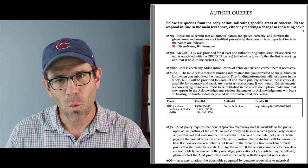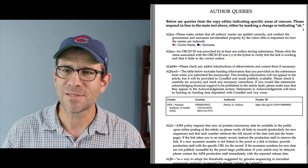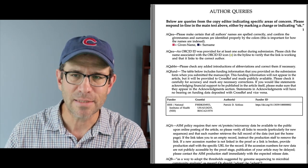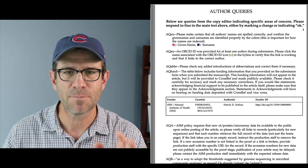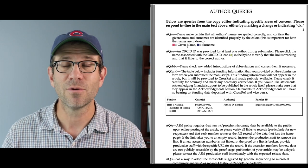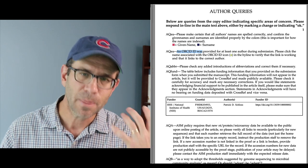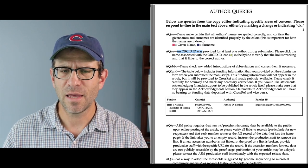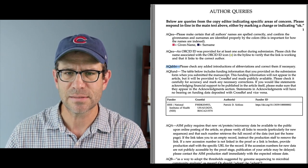At the end, they always have a series of questions. They want to make sure that the authors' names are spelled correctly and that the given names and surnames are identified properly by these colors — the given name in a purple color and the surname in a darker purple color. And that an ORCID ID was provided for at least one author. Then AQ-ABBR: please check any additional introductions or abbreviations and correct them as necessary. And I want to make sure that my funding is correct.